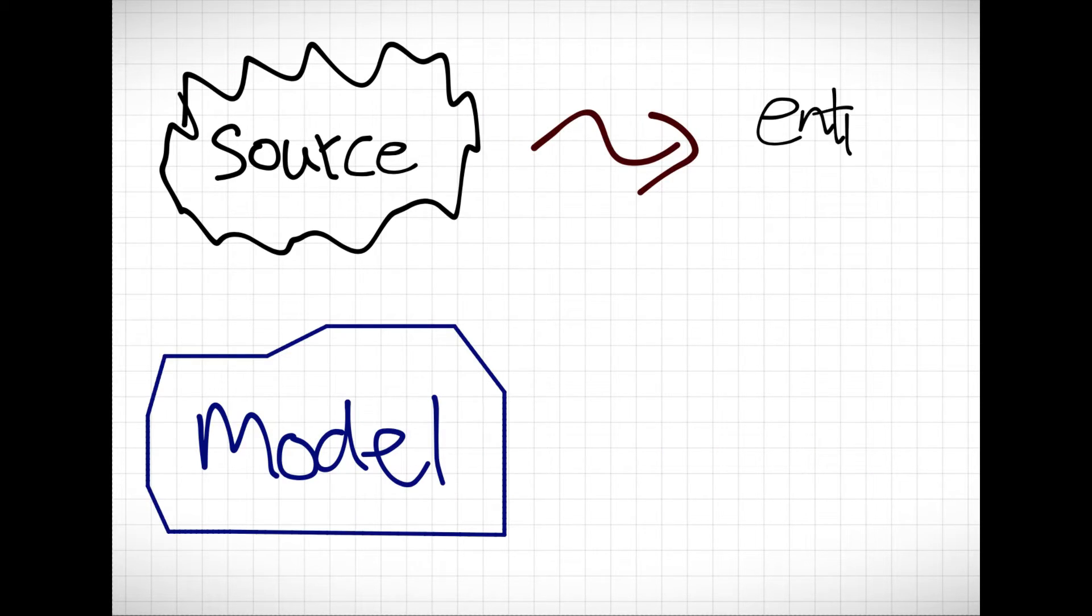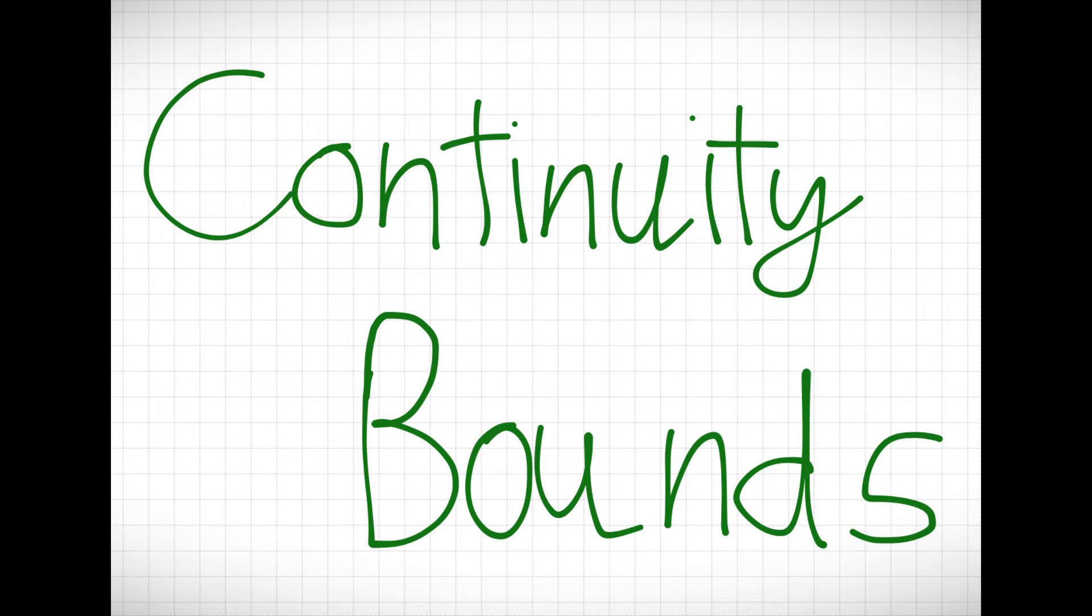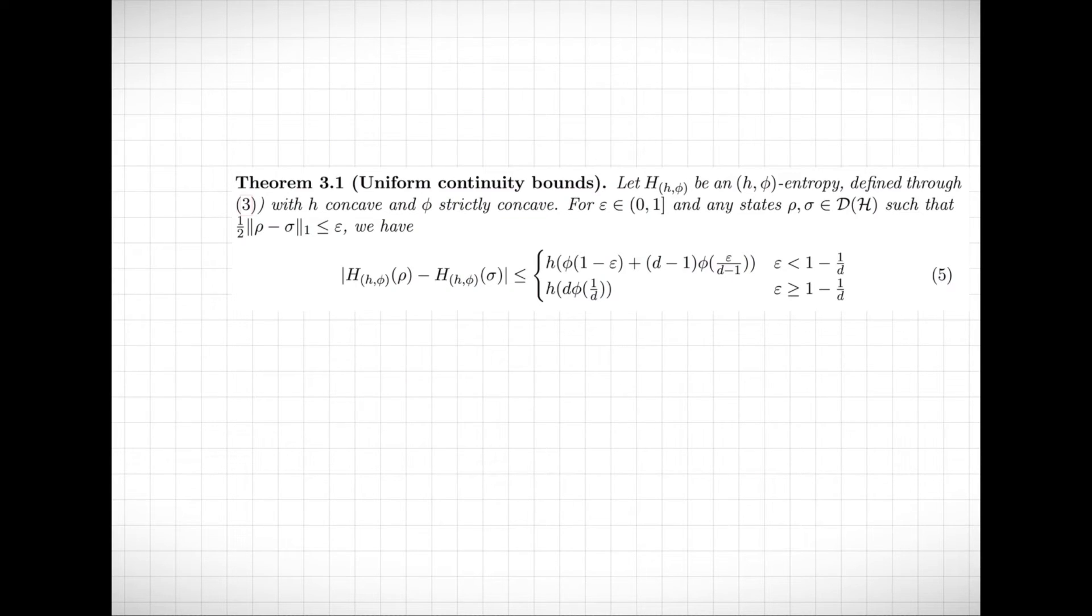If there are errors in how we model the source of information, how much could the true entropy vary from the entropy we find from our model? A continuity bound helps answer this question by finding a mathematical expression for how much that entropy can change between two sources, in terms of some measure of difference between the two sources.